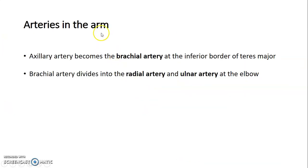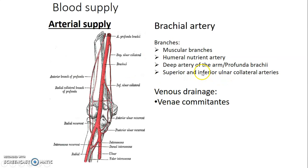So which arteries are in the arm? The axillary artery terminates at the inferior border of teres major, and at that point it continues as the brachial artery — so the brachial artery is the artery of the arm, originating at the inferior border of teres major. At the elbow, this brachial artery divides laterally into the radial artery and medially into the ulnar artery.